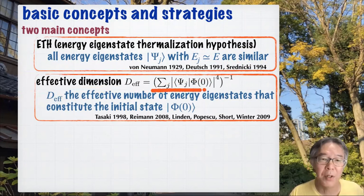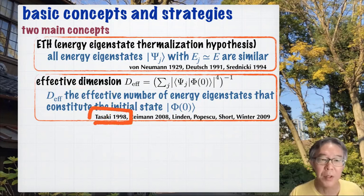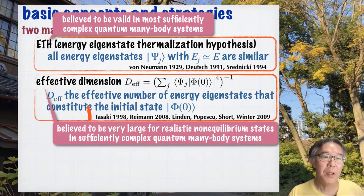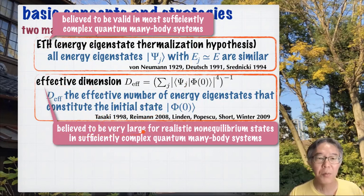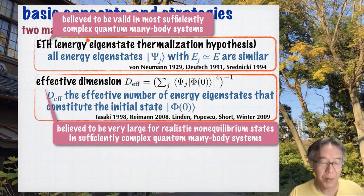The effective dimension D_eff counts the effective number of energy eigenstates that constitute the initial state Φ₀. The importance of effective dimension in the business of thermalization was first pointed out by myself back in '98. We believe that ETH is valid in most sufficiently complex quantum many-body systems, and also that the effective dimension is very large — almost the same as the whole Hilbert space dimension for realistic non-equilibrium states. These are strong beliefs, but we still do not have a general proof, and we think the proofs of these statements are very, very difficult.